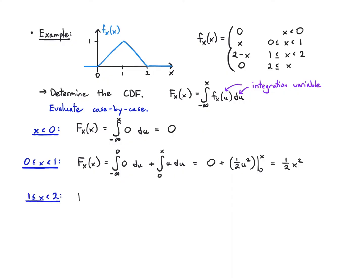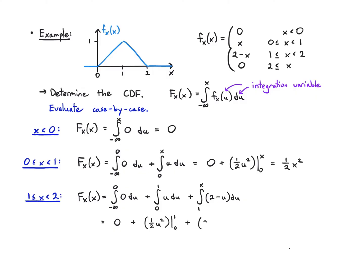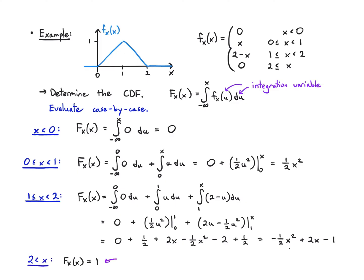For 1 ≤ x ≤ 2, we integrate from 0 to 1 of u, crossing the whole range, then from 1 to x of (2 − u). This gives (1/2)u² from 0 to 1, plus 2u − (1/2)u² from 1 to x, which works out to −(1/2)x² + 2x − 1. Finally, for x > 2, the CDF is 1 — we've already integrated the entire pdf, there's no more probability to absorb, and probability can't exceed 1.